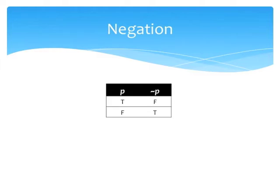Again, the meaning of the tilde is completely captured by a truth table. If the original sentence is true, then adding the tilde produces a false sentence, and the opposite happens when you start with a false sentence. So what the tilde does is simply invert the truth value of the original sentence. If 'Al works' is true, then 'Al doesn't work' is false. And if 'Beth sings' is false, then 'Beth doesn't sing' is true.